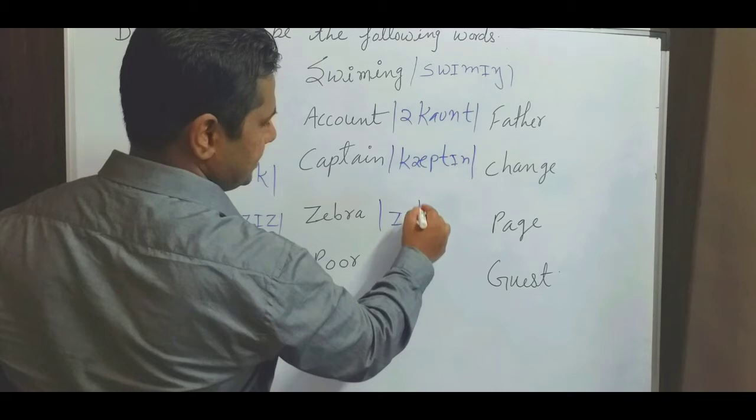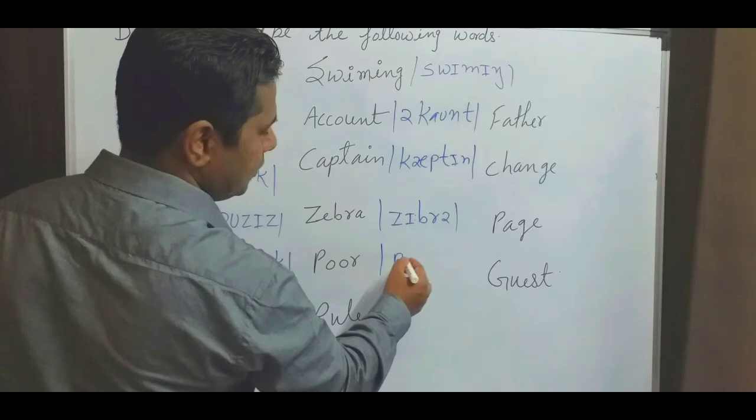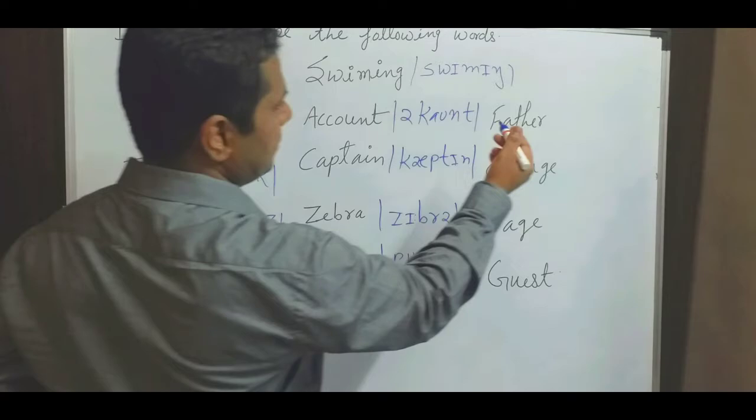Zebra - or you can put the long mark /ˈziːbrə/ with the longer vowel. Poor - /pɔː/. Rule - /ruːl/ with a longer vowel. Father - which is the /ɑː/ sound.